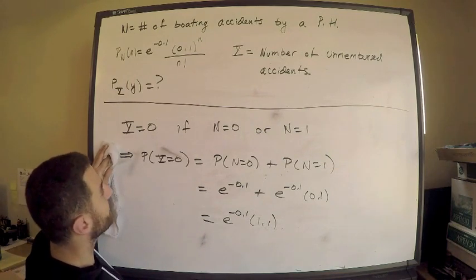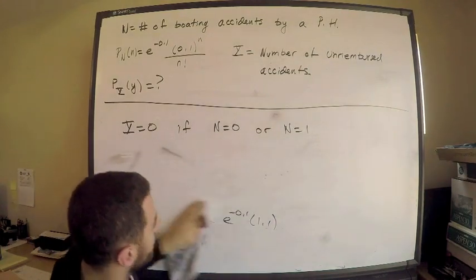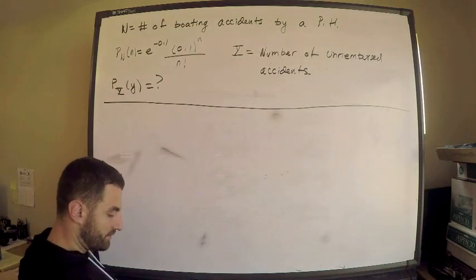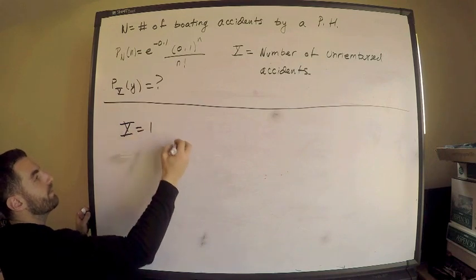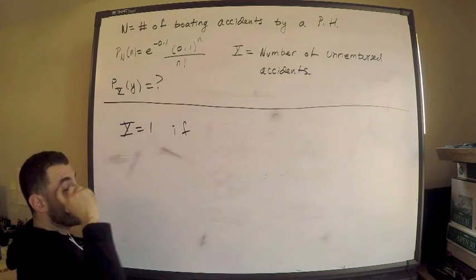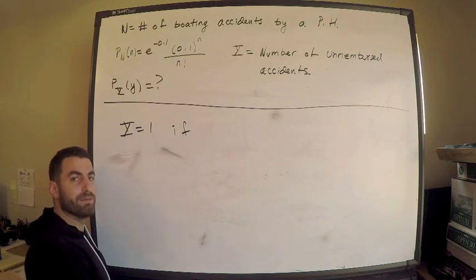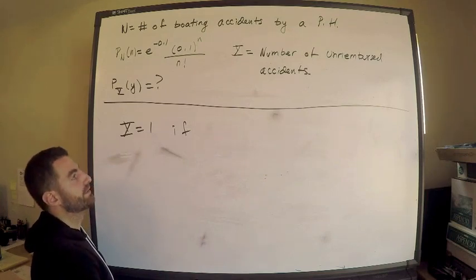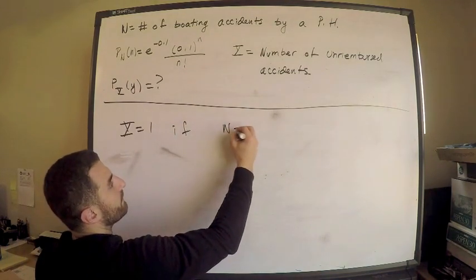Now let's look at when Y is one. So how could Y be equal to one? So Y is equal to one. My random variable Y equals one if what happens here? In other words, we have one unreimbursed accident. Insurance pays for the first one. We pay for the second one. So this is if N is two.